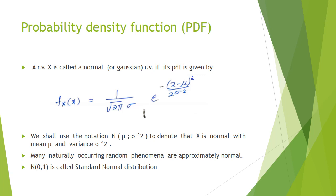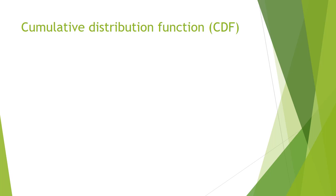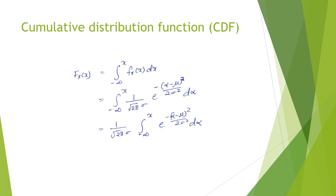Now we will see how to find the cumulative distribution function (CDF). The CDF F_X(x) = integral from minus infinity to x of f_X(x) dx. Substituting the Gaussian PDF, we get F_X(x) = integral from minus infinity to x of (1 / sqrt(2π) * sigma) * exp(-(alpha - mu)² / (2 * sigma²)) d(alpha), where alpha is used instead of x to avoid confusion.